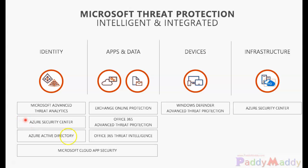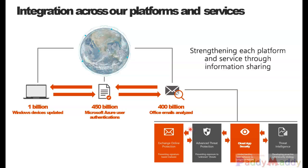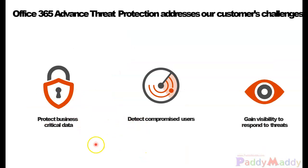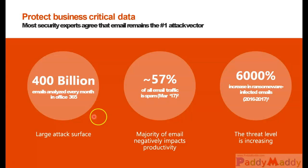ATP can talk with apps, data, devices, and the entire infrastructure. Office 365 Threat Protection and other products can also be integrated. You see here Exchange Online Protection, ATP, Cloud App Security, and Threat Intelligence — all these different projects come into ATP. It can protect your business, detect compromised users, and give you visibility of those threats.